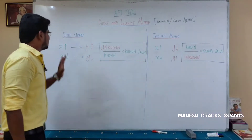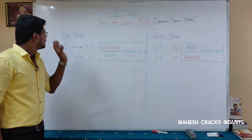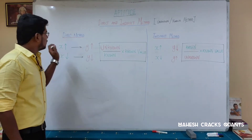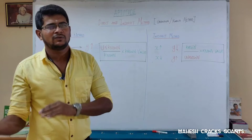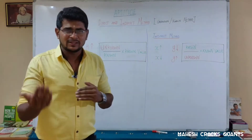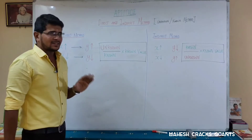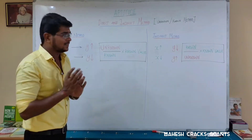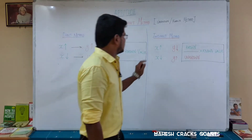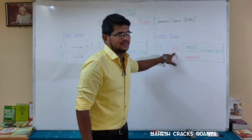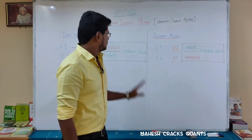Let's go to the diagram. In the direct method, when x increases y also increases, and when x decreases y also decreases. The formula is: unknown divided by known, multiplied by the known value. There will always be given values and one unknown value to find out.